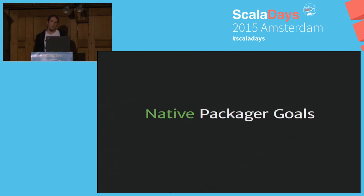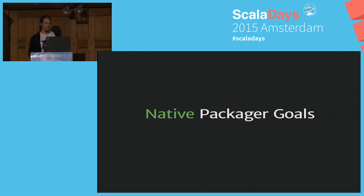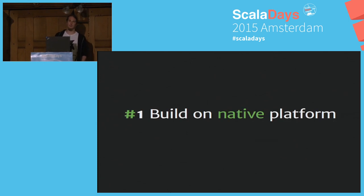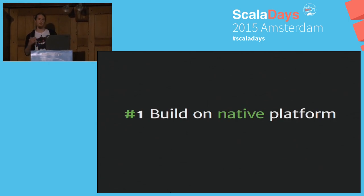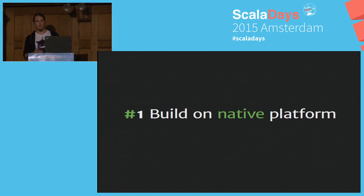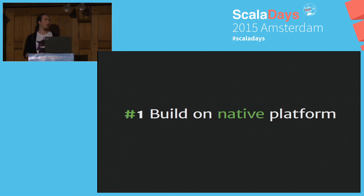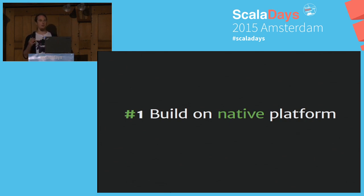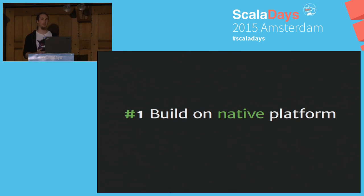I want to talk about the goals of this project, because sometimes people are confused — like, they think we are an RPM build tool. That's not one of our goals. Our first goal is to build on the native platform. This sounds maybe not straightforward at first, but we want a robust build you can easily reproduce on your build machine. If you want to build a Debian package, it should always build on a Debian system. SBT Native Packager takes your package, builds a build space, creates the necessary configuration for the build tool, and then executes the command line tool.